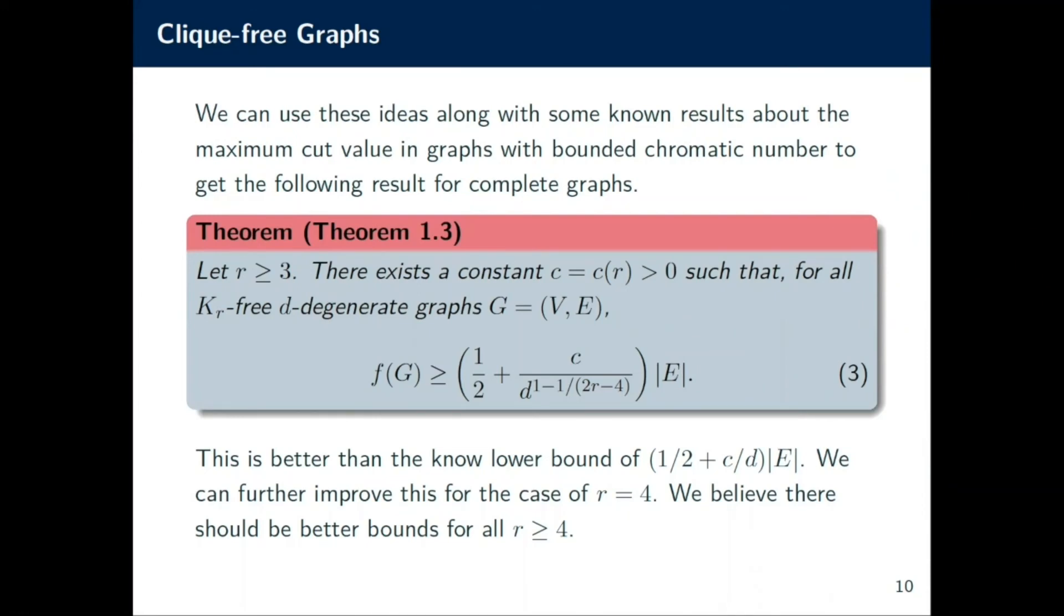And this is how we get what is our another one of our takeaway results, Theorem 1.3, which says that for r ≥ 3, since r = 2 is not very interesting, there must exist a constant that depends on r such that you get f(G) > 1/2 + c/(d^(1/(r-1)-δ)) |E|. But what you'll notice is that when r = 3, this does equal √d times |E|.